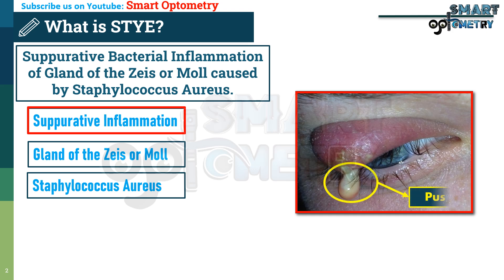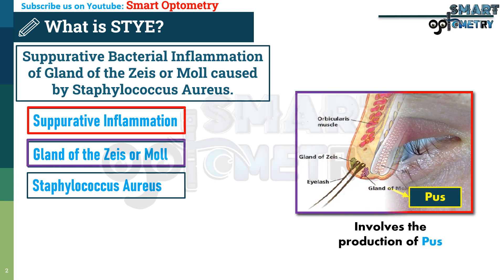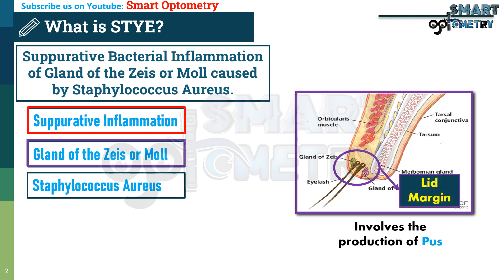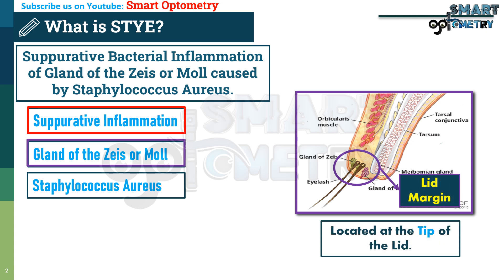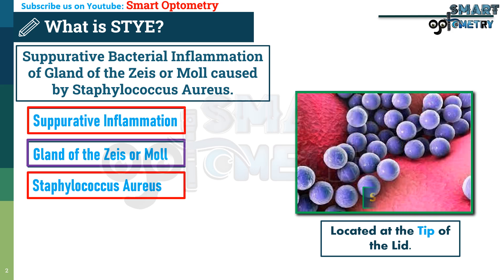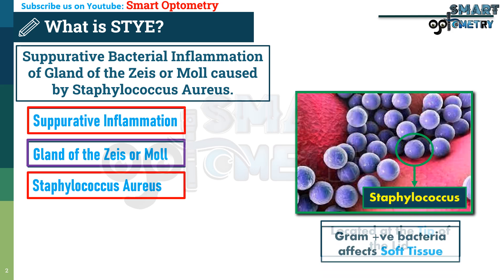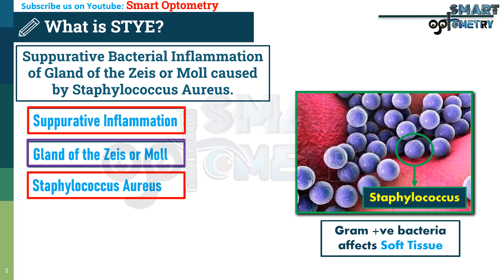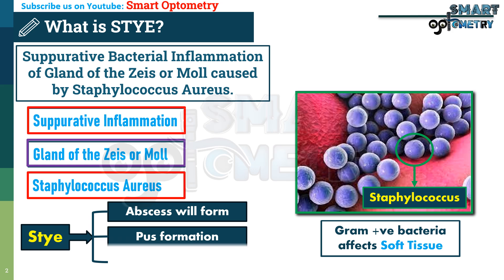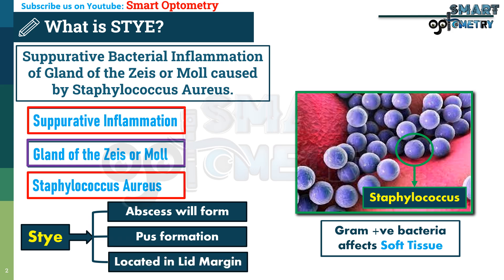Suppurative inflammation is a type of inflammation that involves the production of pus. The gland of Zeis or Moll is located at the tip of the lid, so the location of a stye will always be at the lid margin. Staphylococcus aureus is a gram-positive, spherically shaped bacterium that causes skin and soft tissue infections such as abscesses and cellulitis. In a stye, an abscess forms leading to pus, always located at the lid margin.